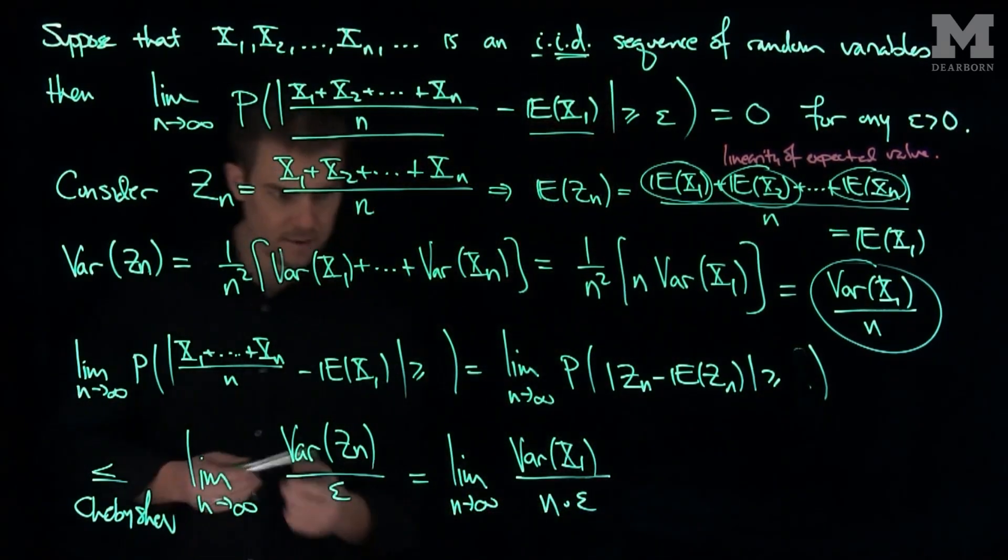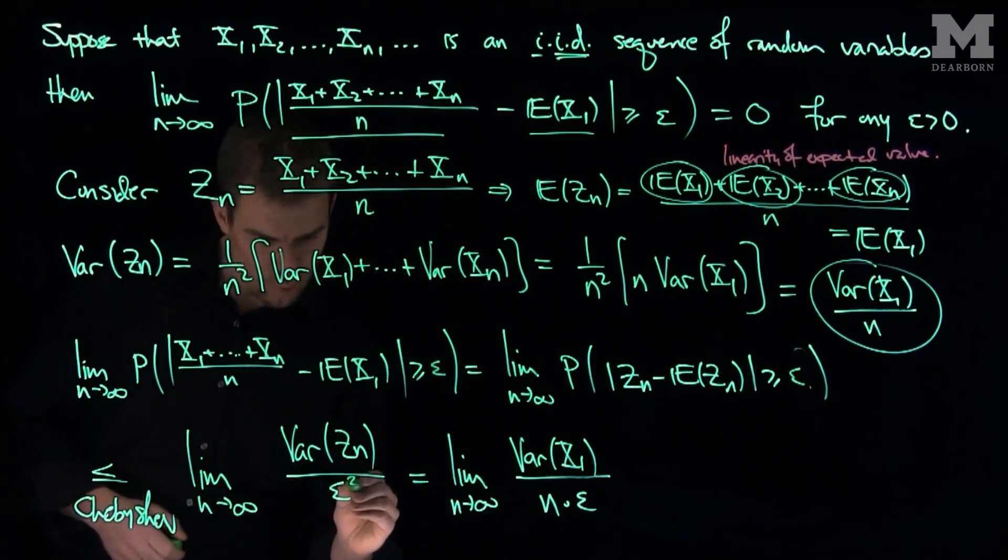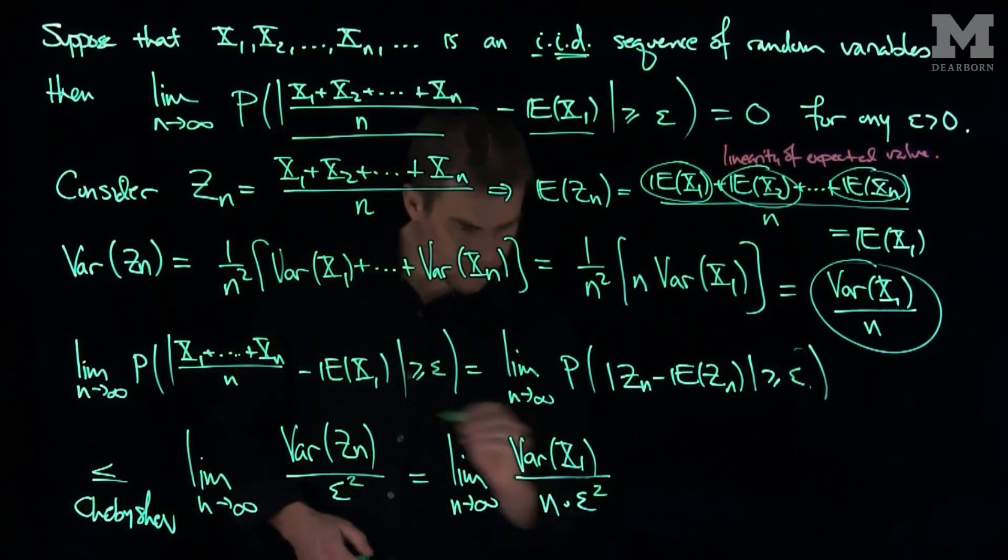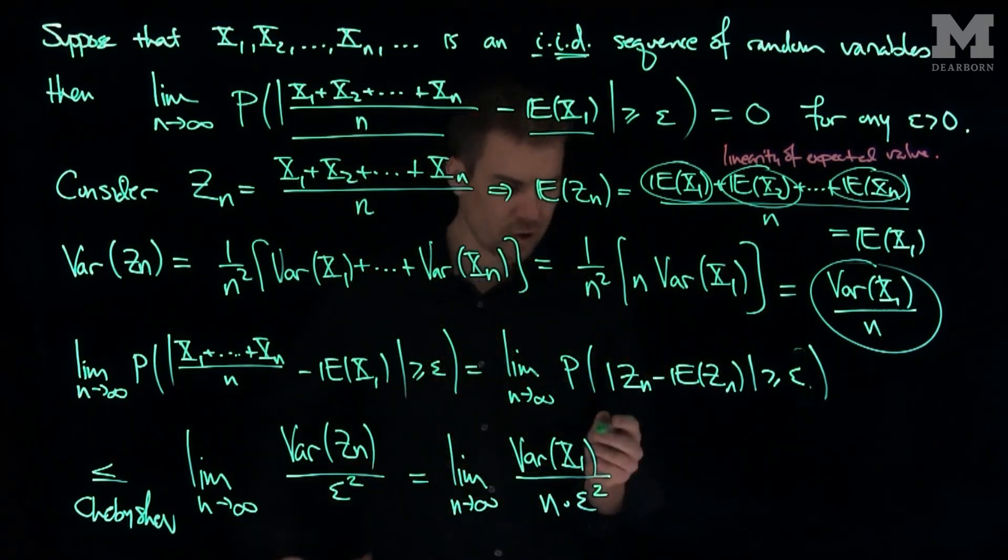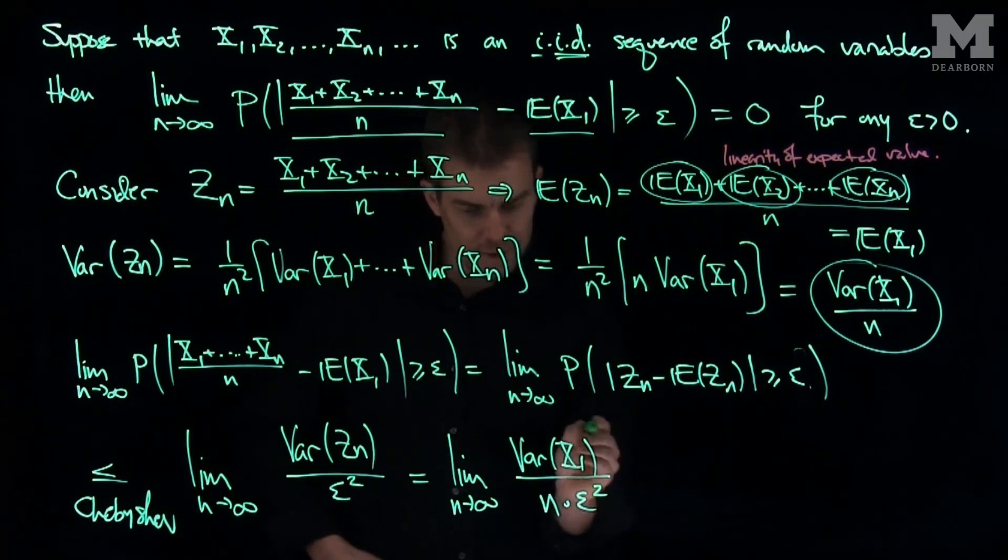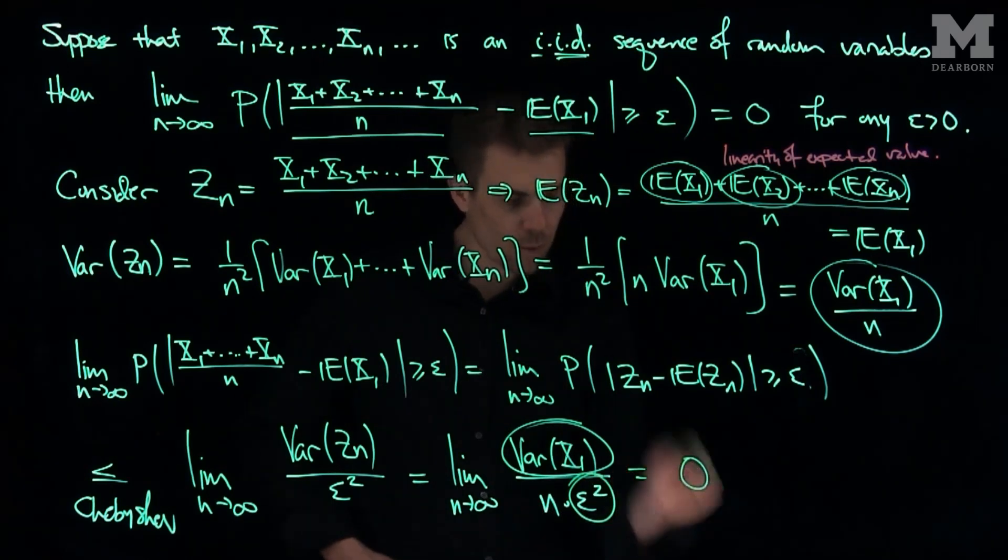So those lambdas become epsilons. Epsilon, epsilon, and Chebyshev has an epsilon squared in the denominator, so we put an epsilon squared over here. We won't change our limit, but we just want to be consistent with our previous notation. And so now what we have here is, as long as the variance of x1 is finite, as n goes to infinity, epsilon squared is a fixed number, so this limit is equal to zero.